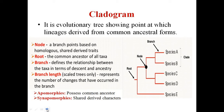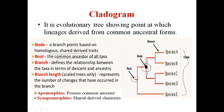A cladogram is an evolutionary tree showing the points at which lineages derived from a common ancestral form. A node is a branch point based on homologous shared derived traits. Here you can observe the node as the common point for derived traits — species A, B, C, and D. The root is the common ancestor of all taxa, as you can observe here.